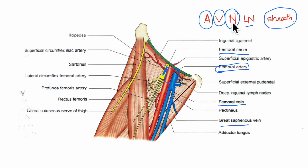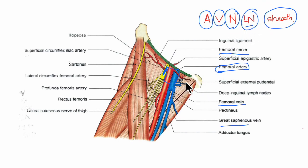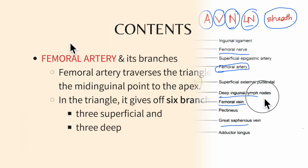The deep inguinal lymph nodes lie deep to the deep fascia, medial to the upper part of the femoral vein. They receive lymph from the superficial inguinal lymph nodes.